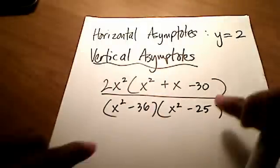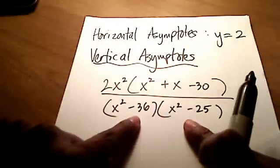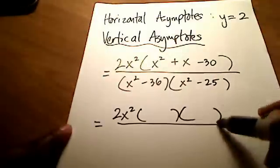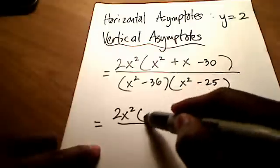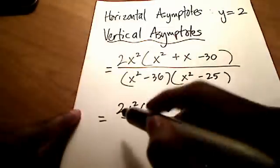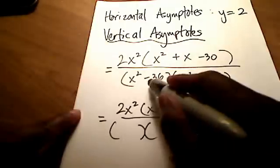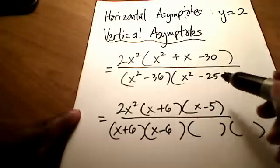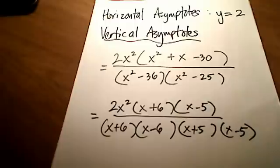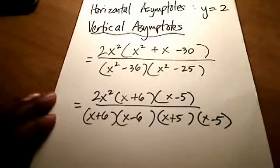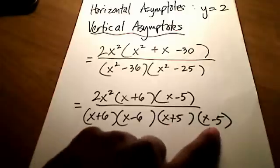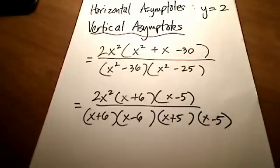These can still be factored further. Keeping the 2x squared in the numerator, the trinomial x squared plus x minus 30 factors into (x + 6)(x − 5). Both denominator terms are differences of squares: x squared minus 36 factors into (x + 6)(x − 6), and x squared minus 25 factors into (x + 5)(x − 5). Now I can see four values that would make the denominator zero: negative 6, positive 6, negative 5, and positive 5.